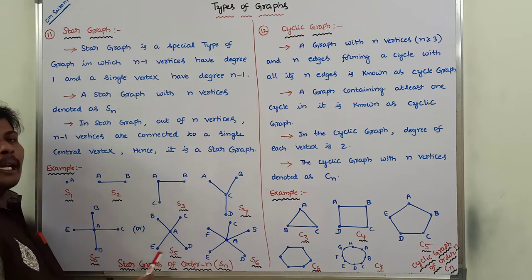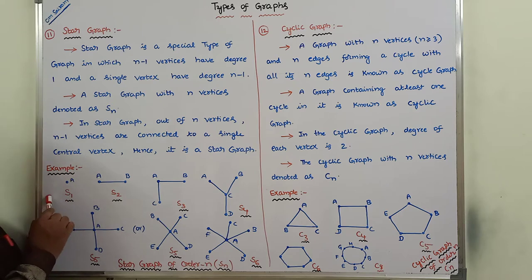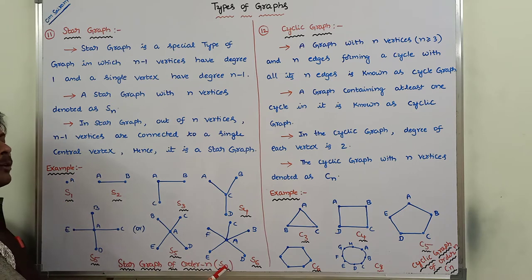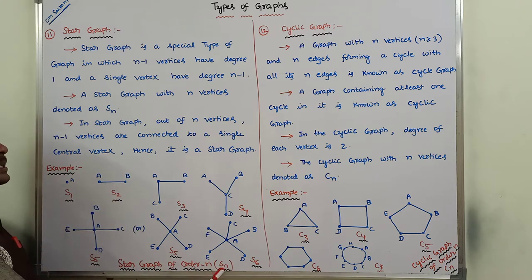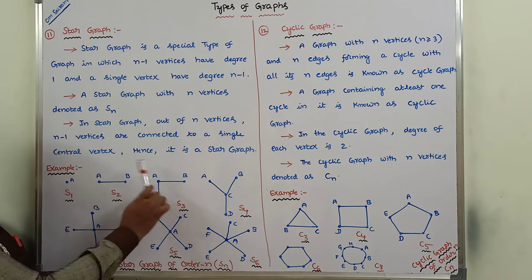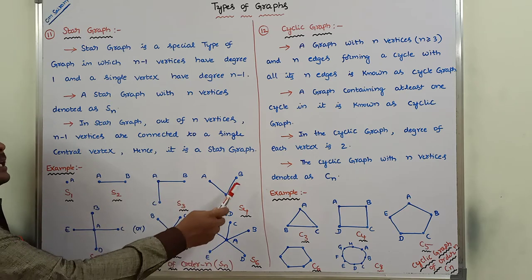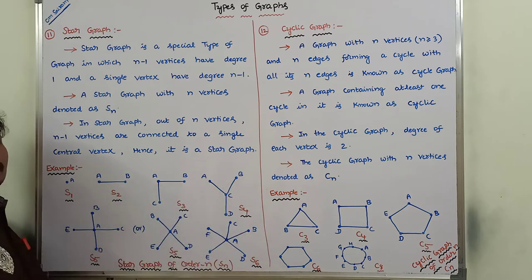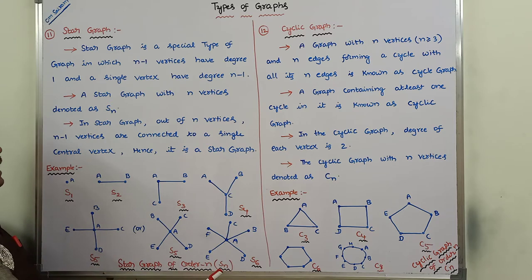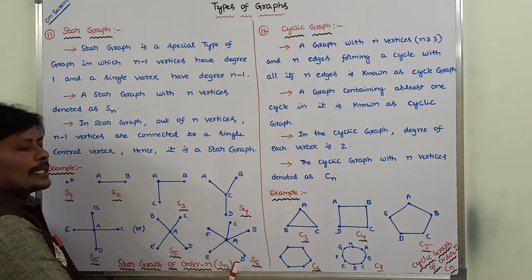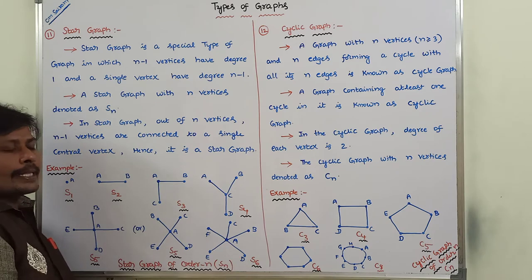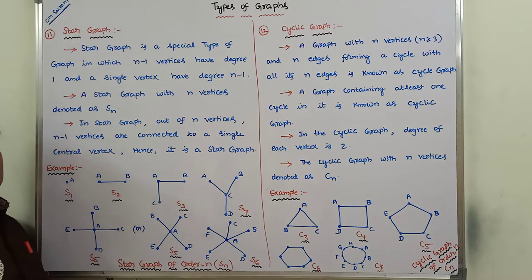If n equals 1, it means a star graph with 1 vertex. If n equals 2, it means a star graph with 2 vertices. If n equals 3, 4, 5, or 6, it means star graphs with 3, 4, 5, or 6 vertices respectively. Now consider this example: a star graph with 6 vertices can be denoted by S suffix 6.